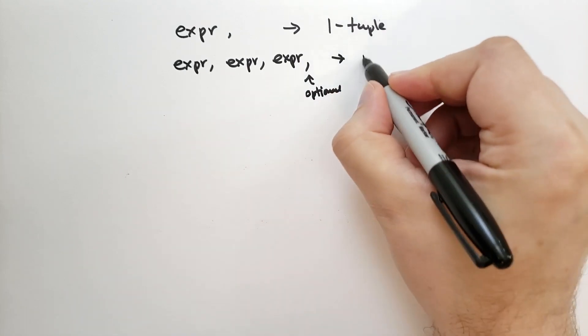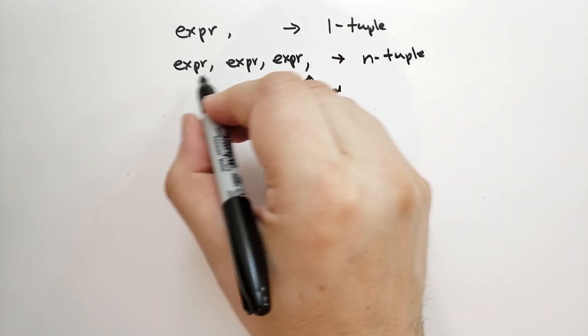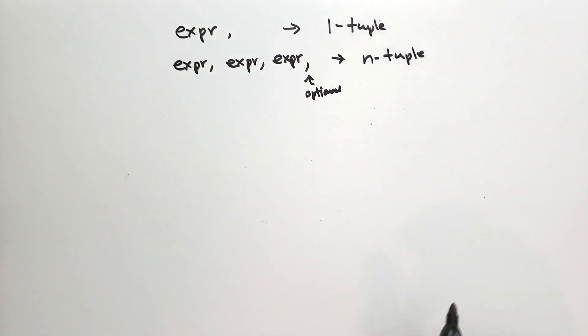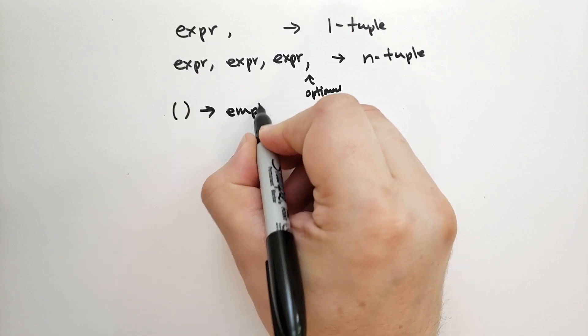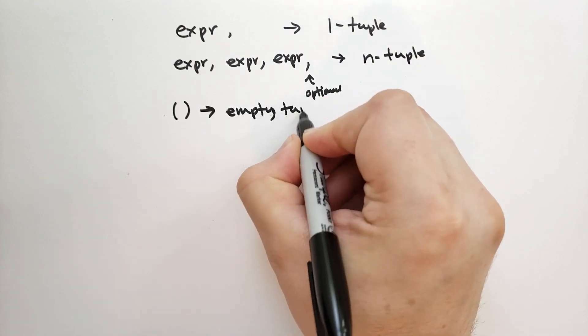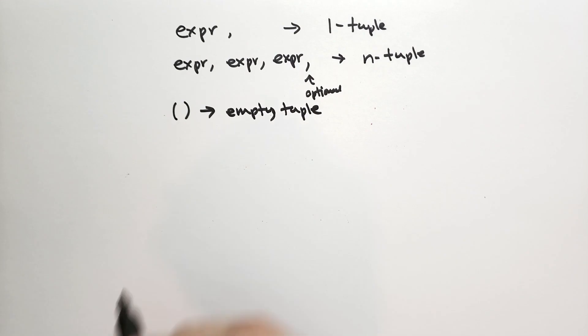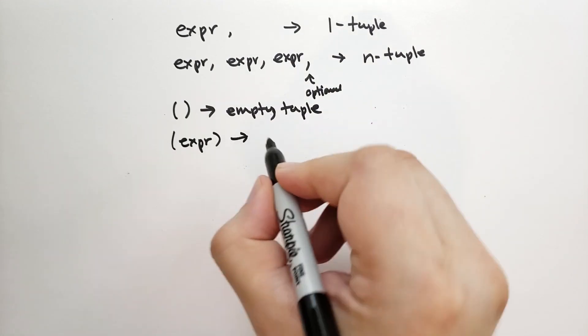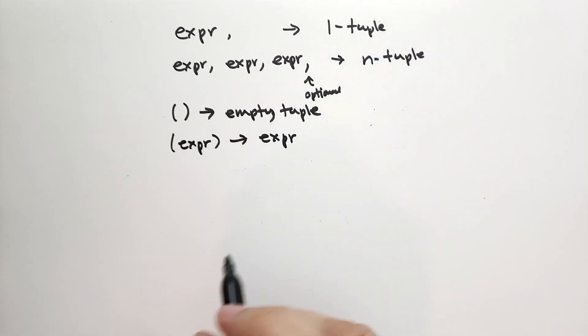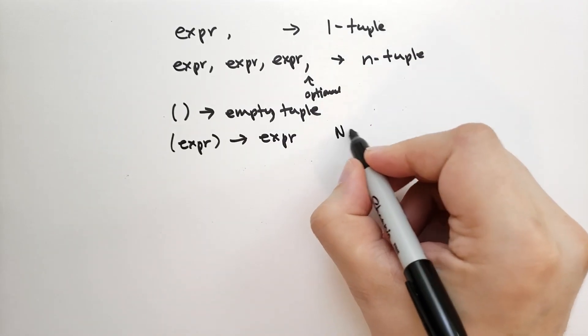And what this will give you is an n tuple. In this case, this is three, but you can have as many as you want. Now, you can also have two parentheses, open and close, right next to each other. And what this gives you is the empty tuple. If you were to have an expression inside of a parenthesis, this is not a tuple. This is just the expression. So not a tuple.